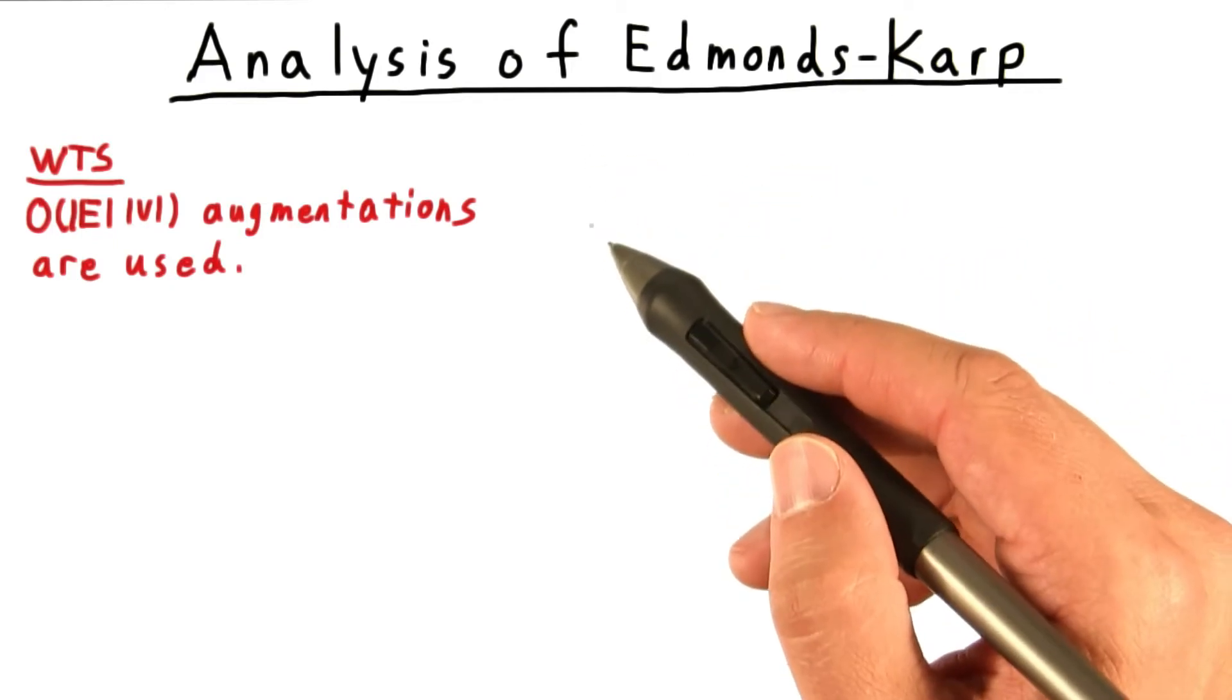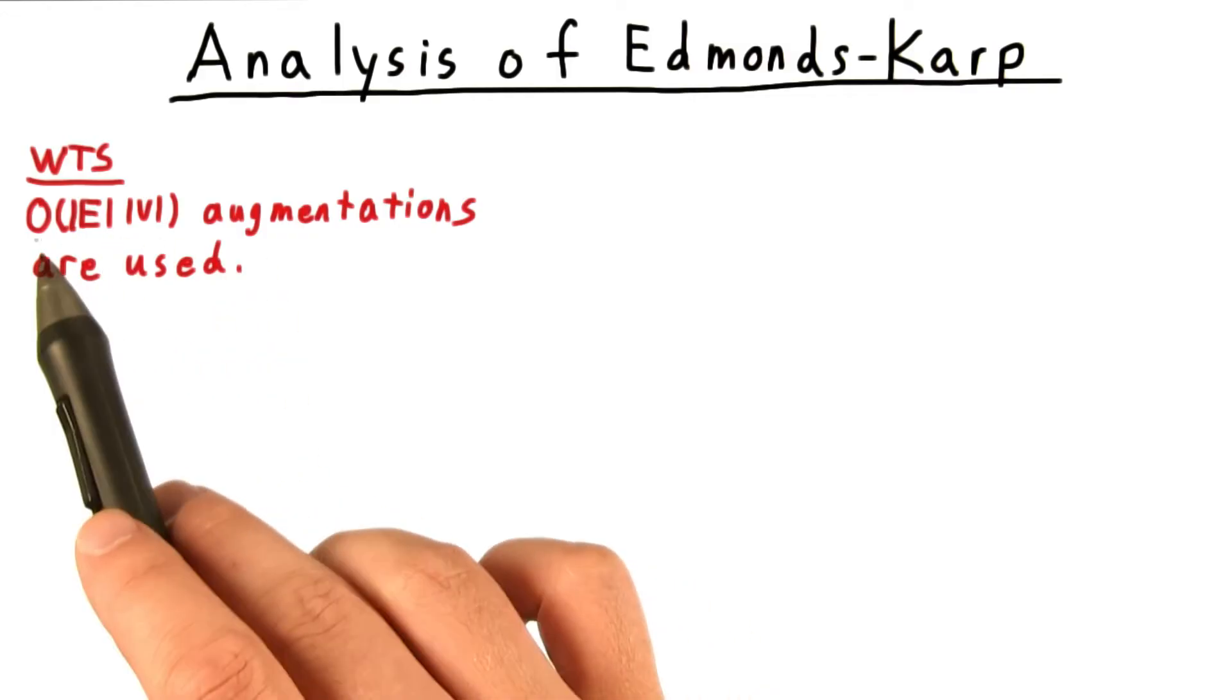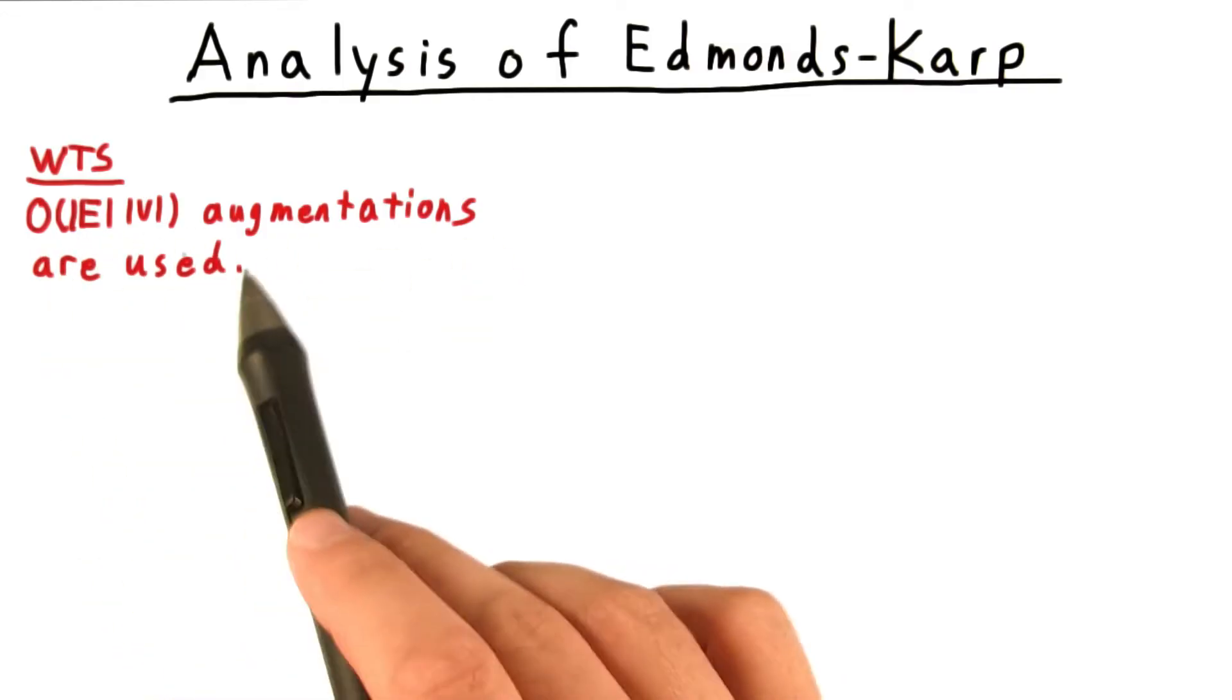Now for the analysis. Mostly, I'll just try to share the intuition. We want to show that order E times V augmentations are used.